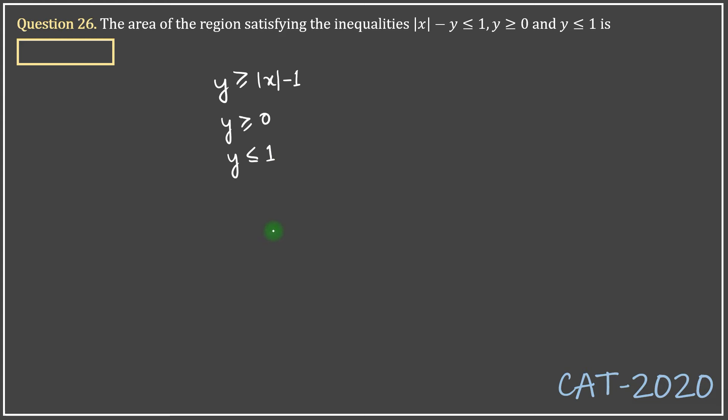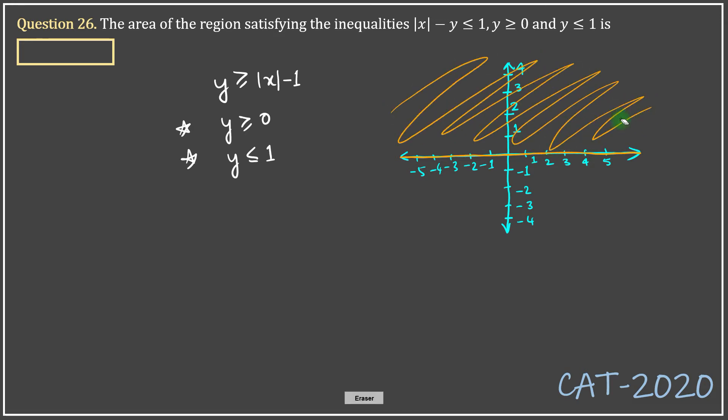Let's plot the graphs. The second and the third lines are very easy, so let's do that first. y is greater than or equal to 0. y is equal to 0 is the x-axis. Now, y being greater than or equal to 0 would mean this entire region above the x-axis.